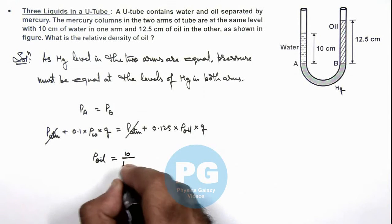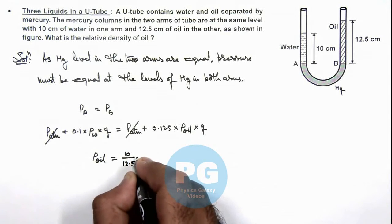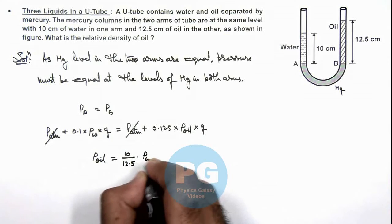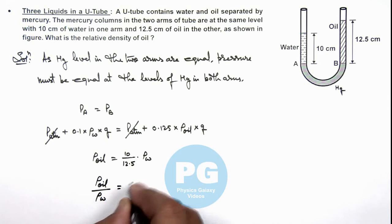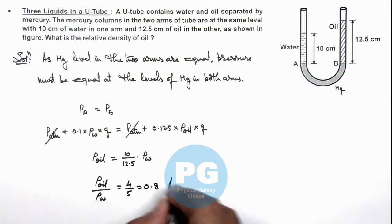10 divided by 12.5 multiplied by ρ_w. Or the relative density of oil can be given as ρ_oil by ρ_water is equal to 4 by 5, that is 0.8. It is the result of this problem.